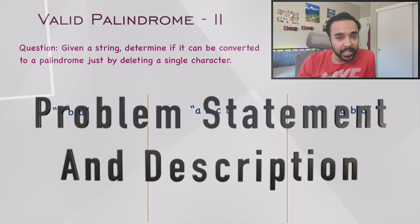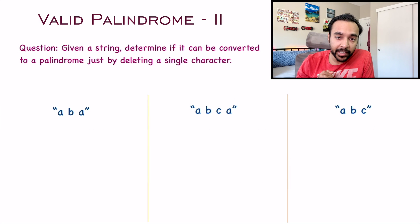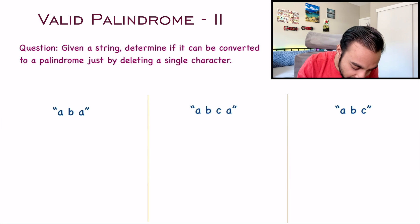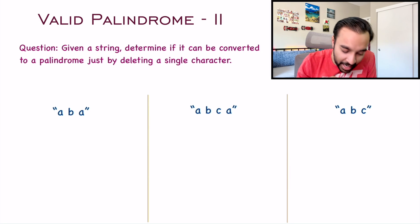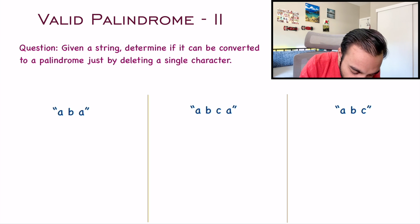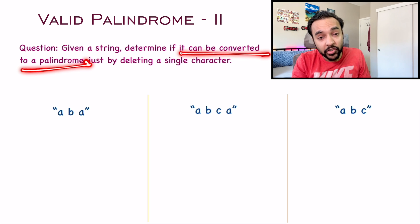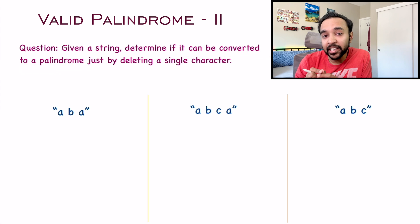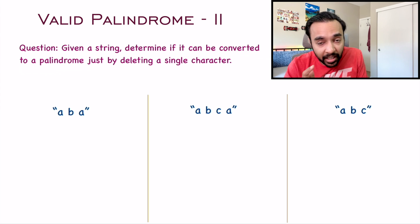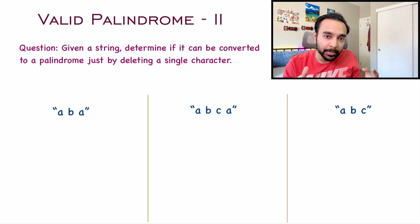First of all, let's make sure that we are understanding the problem statement correctly. In this problem, you are given a string and you have to determine if you can convert it to a palindrome just by deleting any single character. And you just have to delete one character, not all instances of that character.